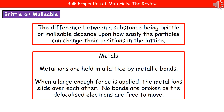The first property we're going to look at is whether these materials are going to be brittle or malleable. Brittle means that if you hit it, it's likely to snap, whereas malleable means they're able to be bent. The key thing that decides whether a substance is brittle or malleable depends upon how easily those particles within the substance can change their positions in the lattice.